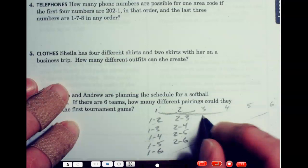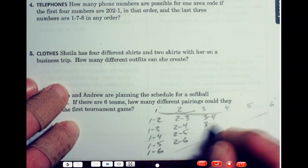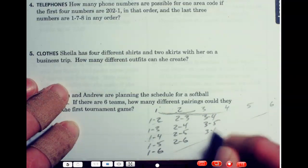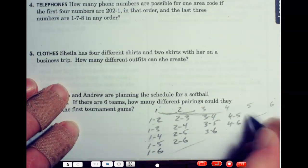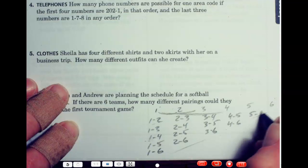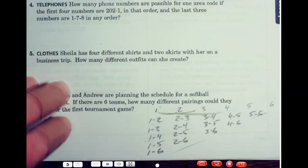Now, you're at three. Three could play four. Three could play five. Three could play six. Now, we're at four. Four could play five. Four could play six. And now, you're at five. Five could play six.